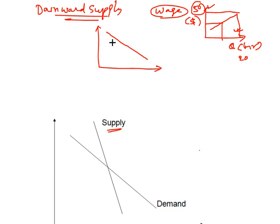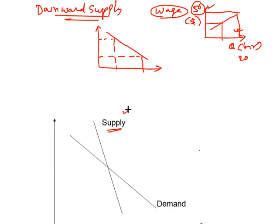At a lower wage level people put in more hours, but at a higher wage level people put in fewer hours because they want time for other activities. This gives us an instance of a downward sloping supply curve.